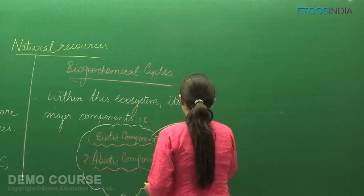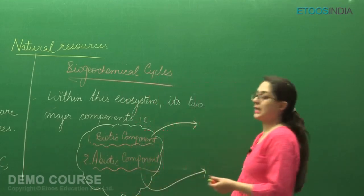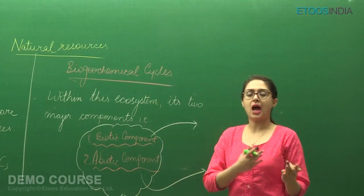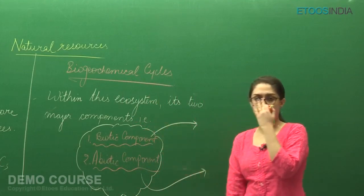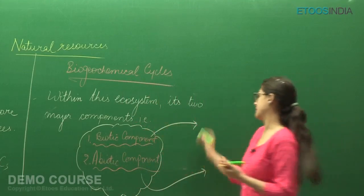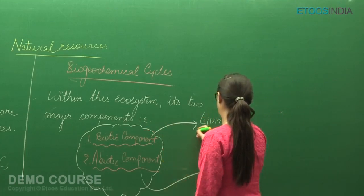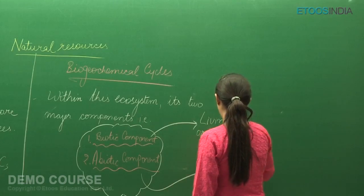Biotic components are actually indicating the living components, that is the living organisms - plants, animals, including human beings, and smaller microorganisms.